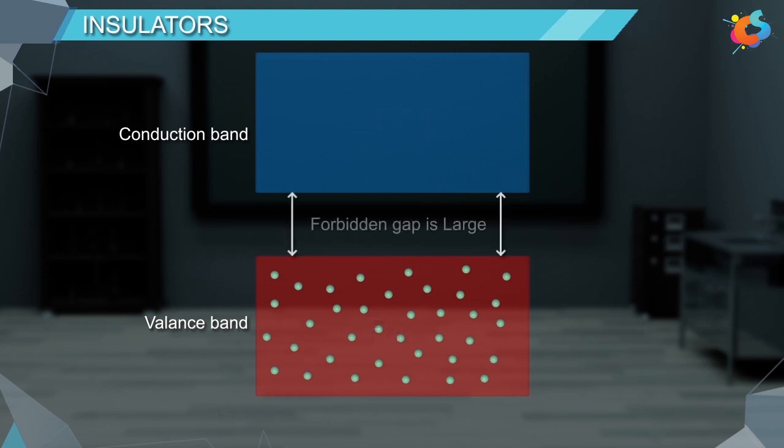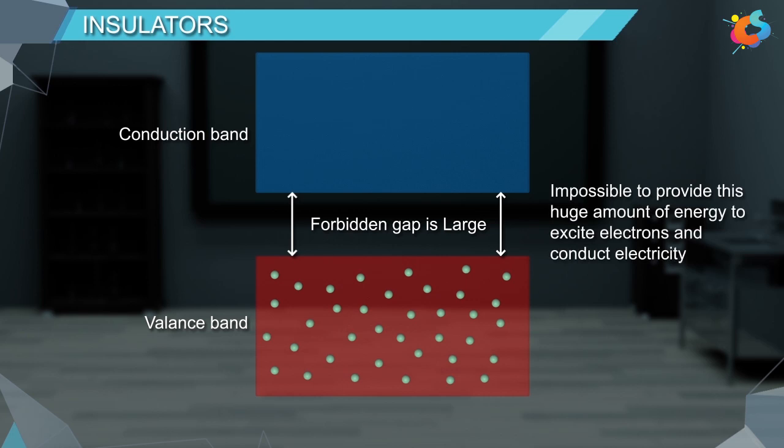Even the forbidden energy gap between the valence and conduction band is large. As a result, a huge amount of energy is required to excite electrons to the conduction band. Practically, it is impossible to provide this huge amount of energy to excite electrons and conduct electricity. Therefore, most non-metals are insulators.